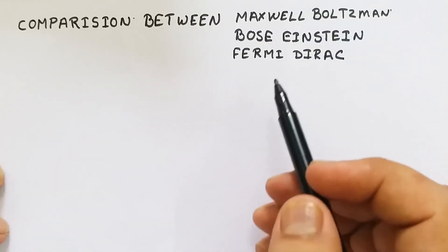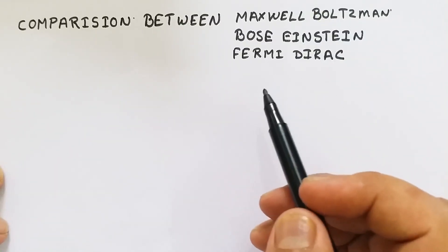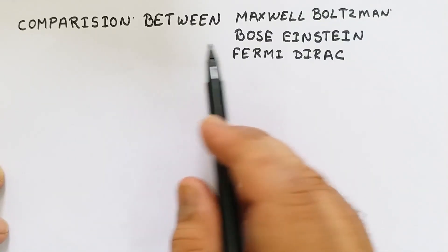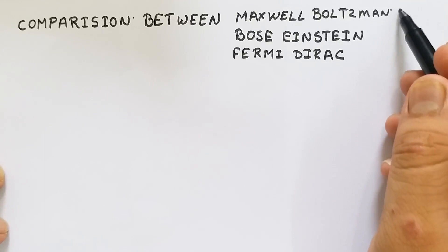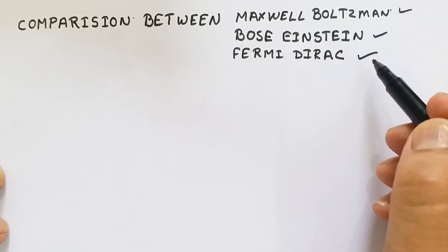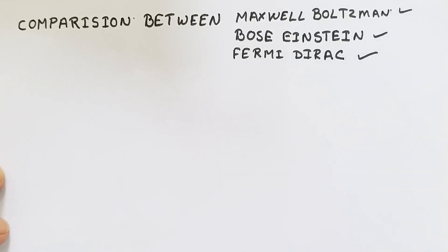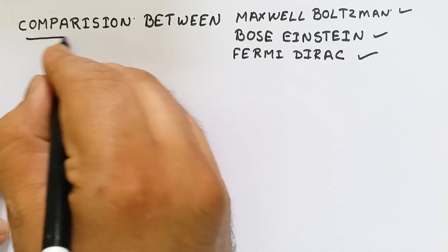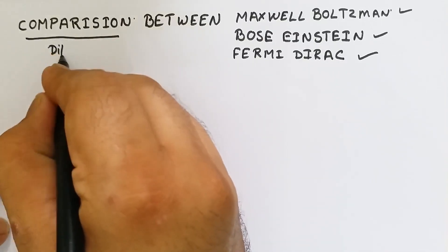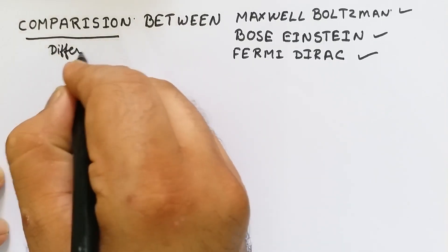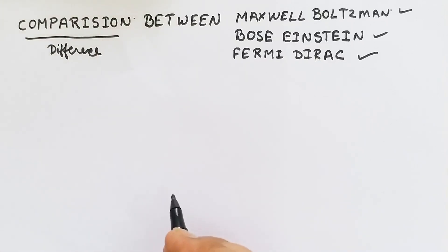Hey friends, welcome. Today we are going to discuss the comparison between Maxwell-Boltzmann, Bose-Einstein, and Fermi-Dirac statistics. These are the three statistics which we are discussing under statistical thermodynamics, and this video will basically be the comparison — or we may write it as the difference — between all three.